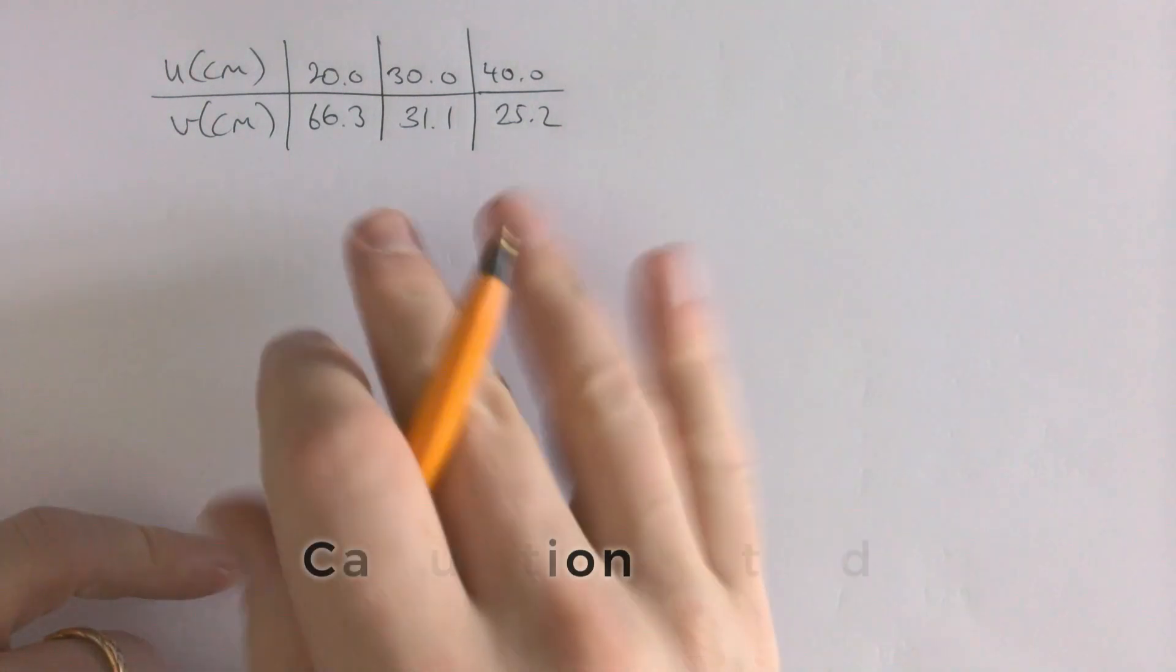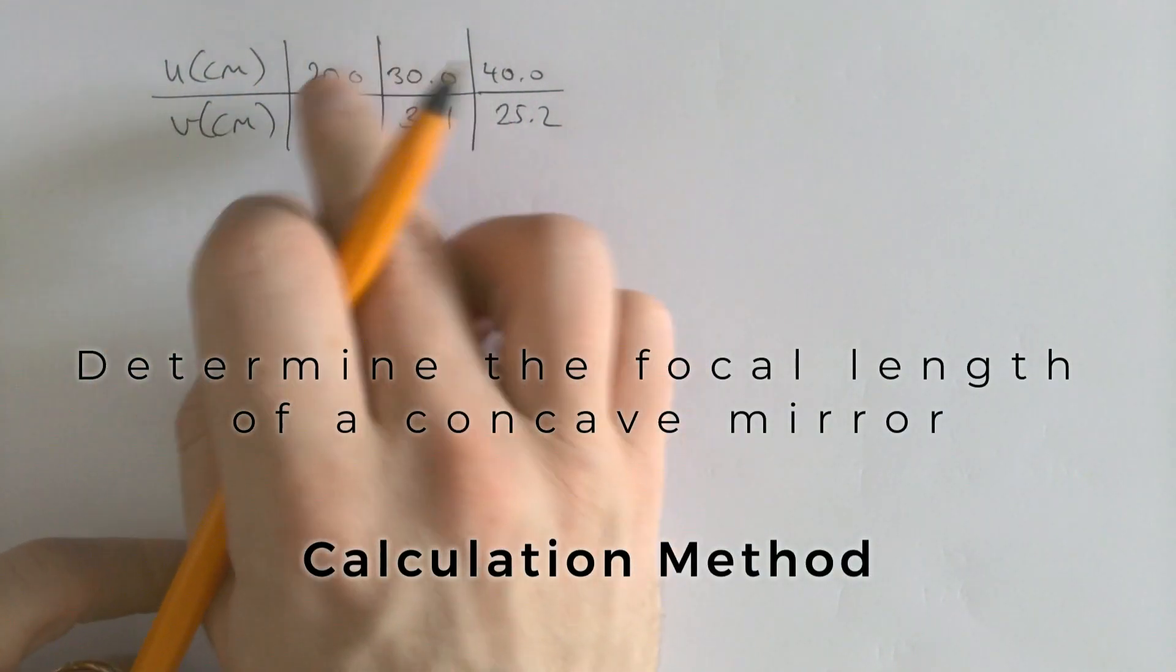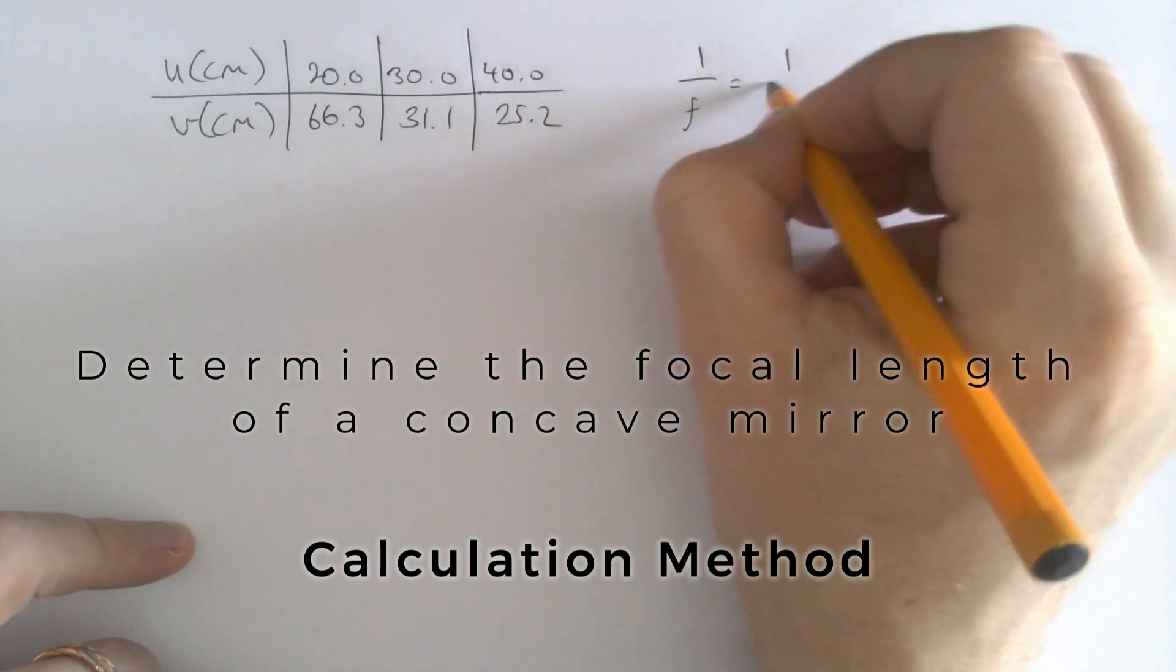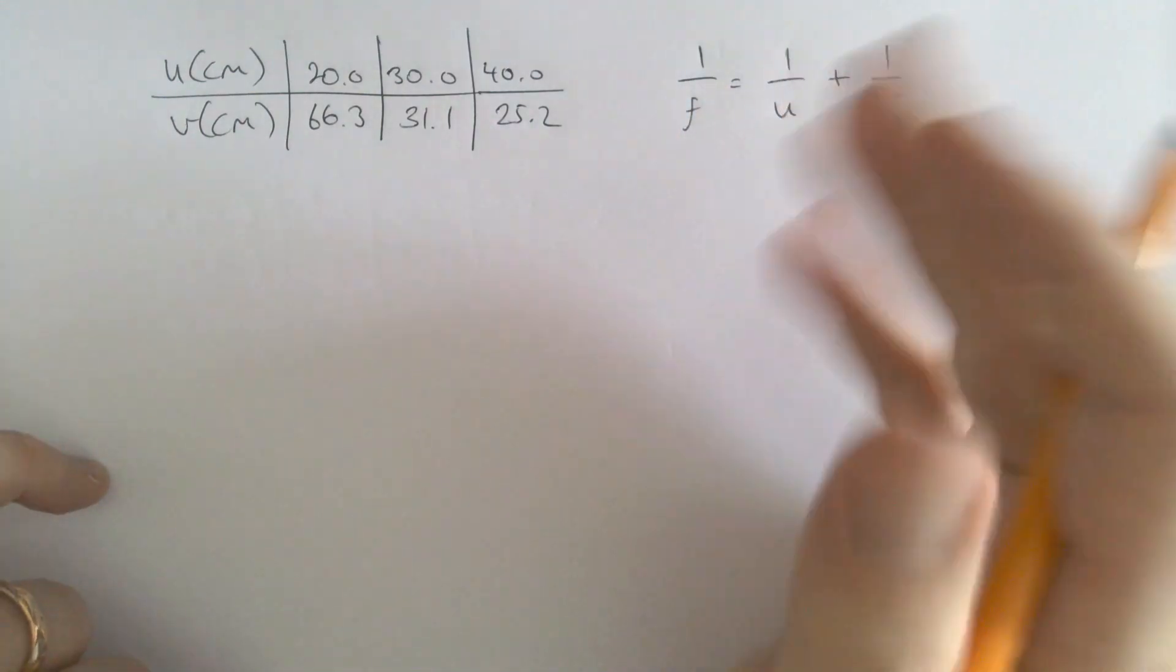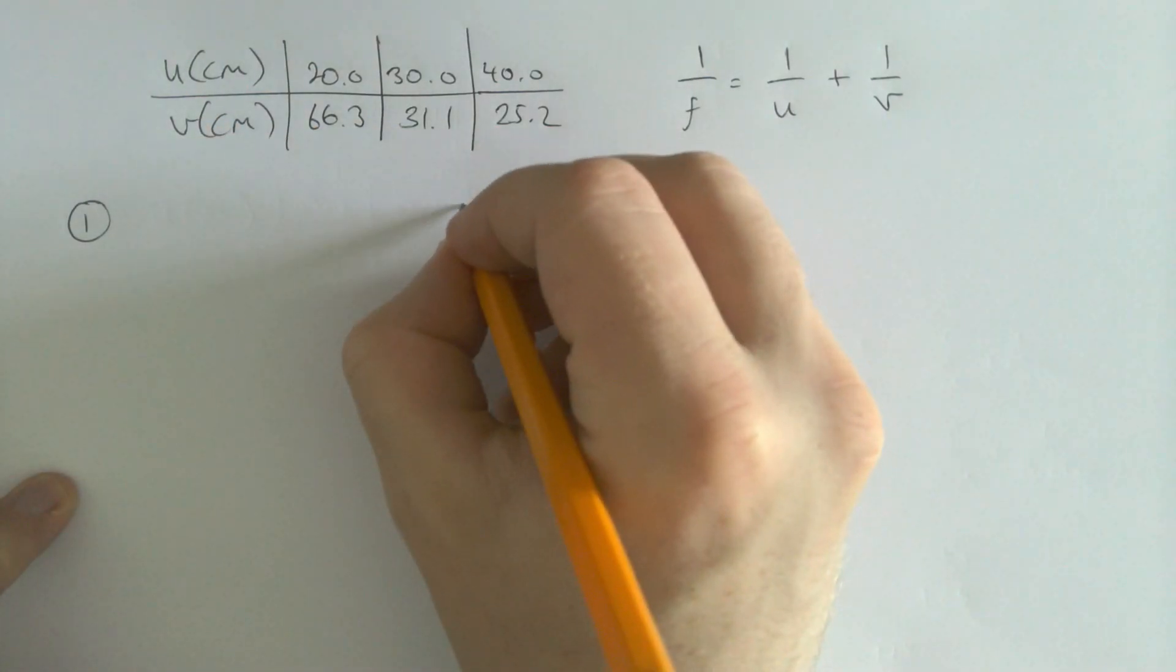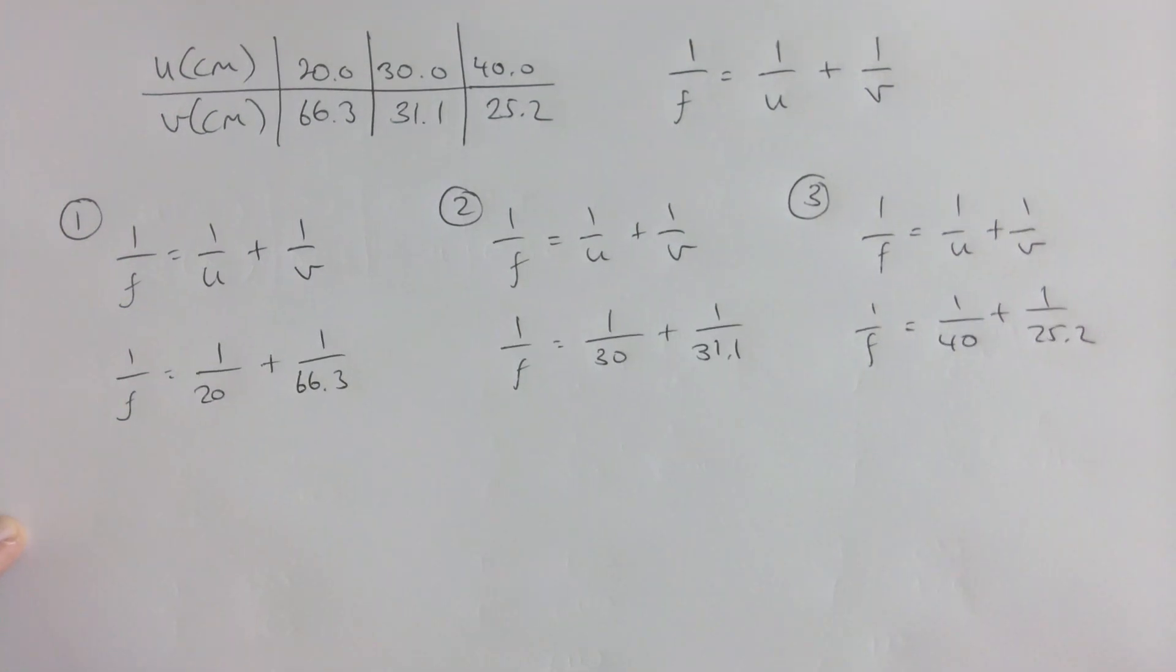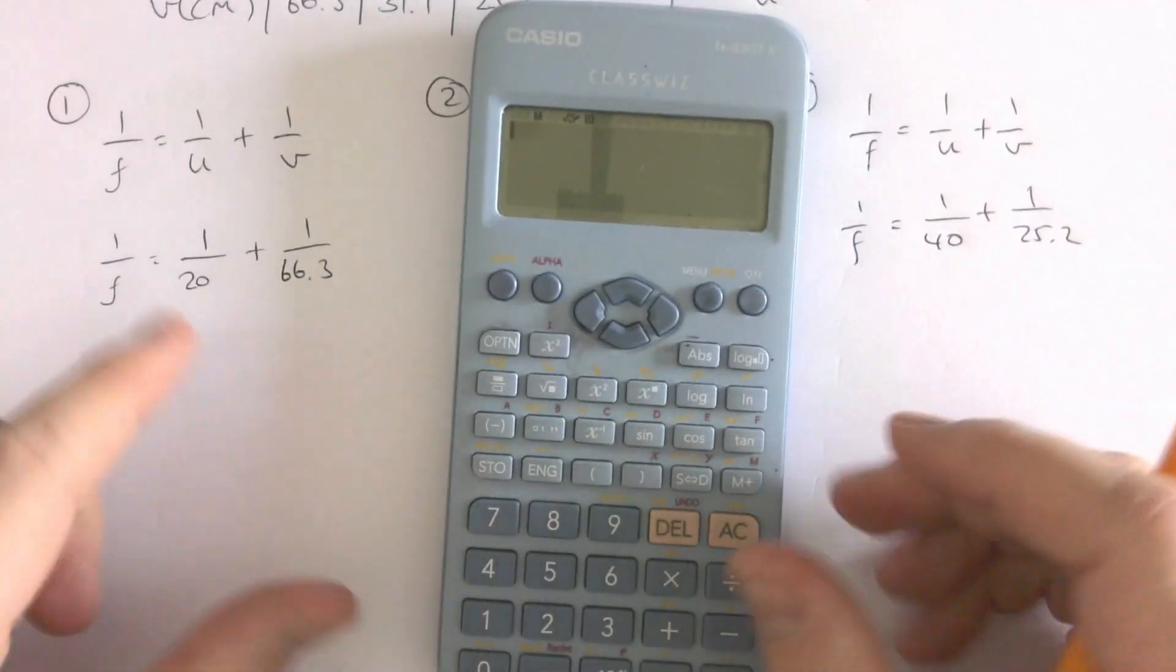So here we have the data from the question. We have our object distance is U and our image distance is V. They're in centimeters. And since they're all in centimeters, I can just do these calculations in centimeters. So I'm not going to bother changing it. Although, if you did change it to meters, it would not be wrong either. So we're going to be utilizing this equation three times. So this is just a case of plug it in and repeat it three times. I'm going to do that slightly sped up.